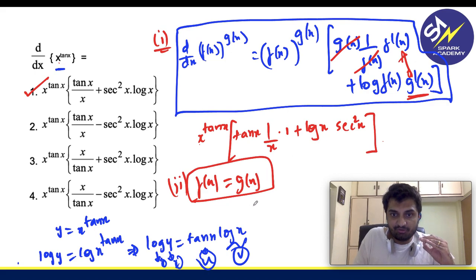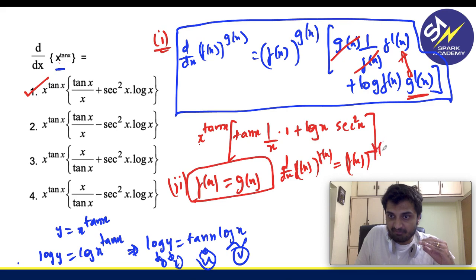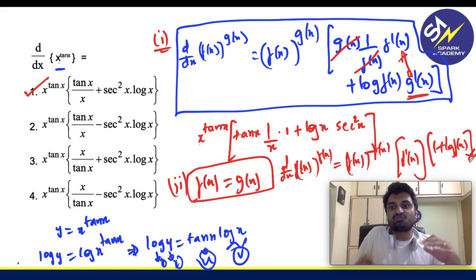So basically if you have d by dx of f of x power f of x form, what will happen is f of x power f of x you have, f dash of x will be common from both, we will have f dash of x, 1 plus log f of x. So in this way simple, any sum you can solve it in this way.